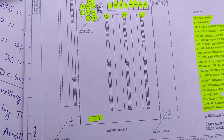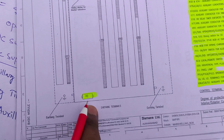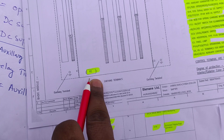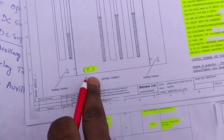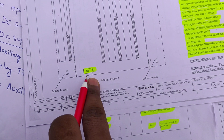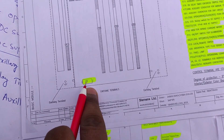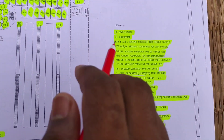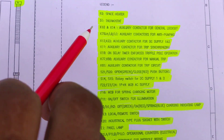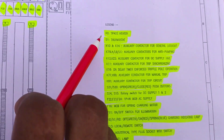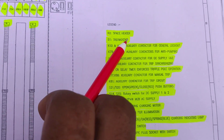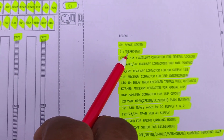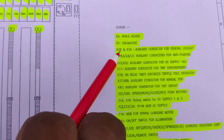R2 is given here for the space heater. This is the space heater — R2 is the space heater. B1 is the thermostat.